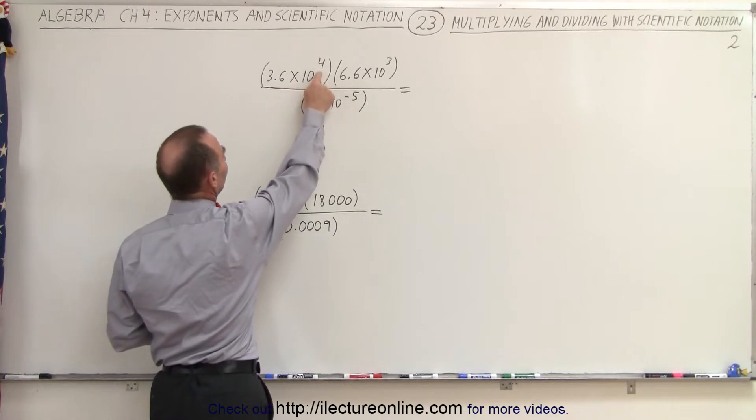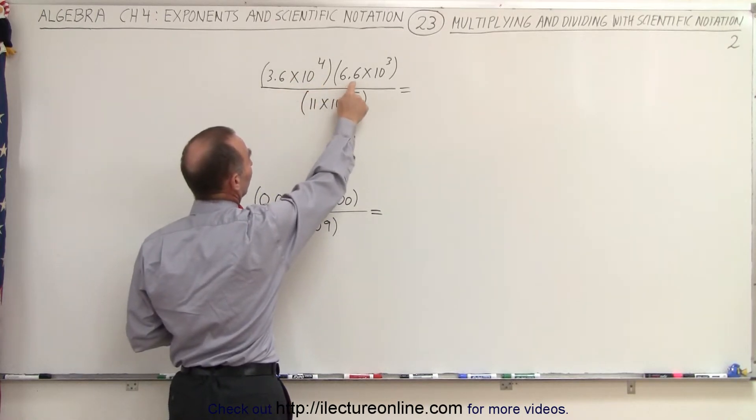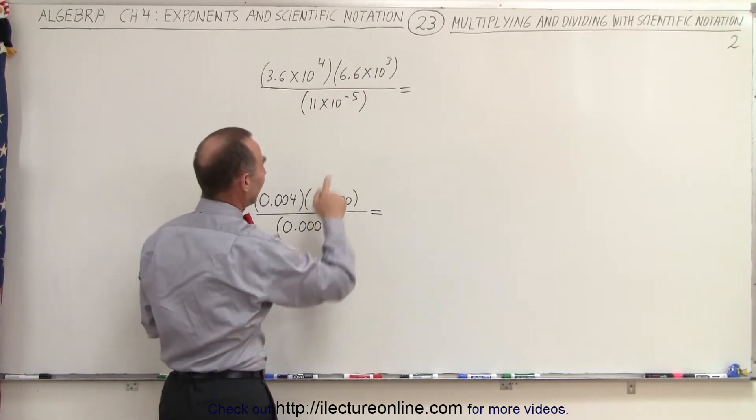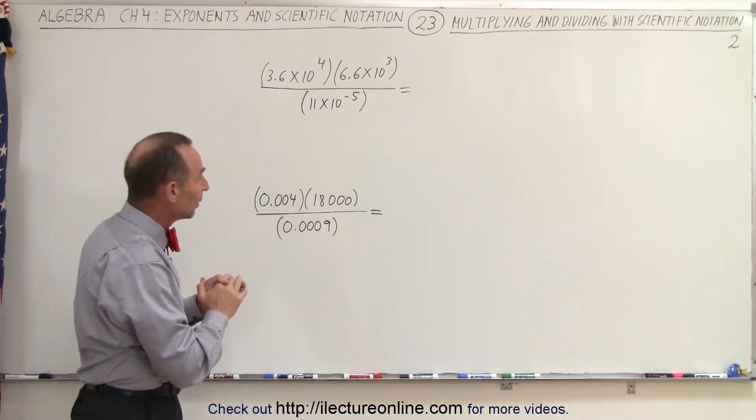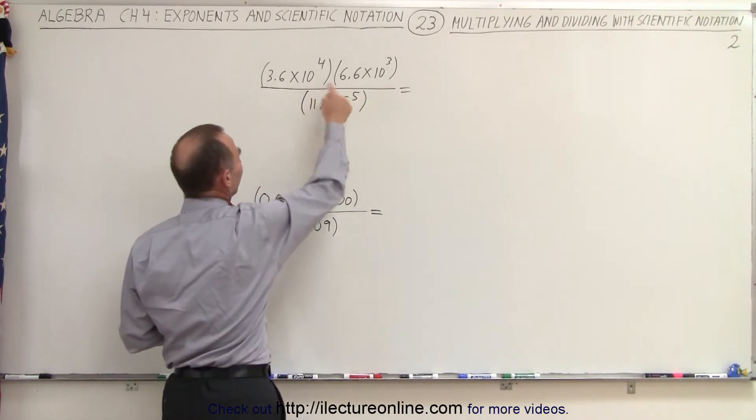Even though 3.6 times 10 to the 4th is in standard form, so is 6.6 times 10 to the 3rd. And in the denominator, it is not in standard form. If we're going to divide 6.6 by 11, that's a little bit awkward.